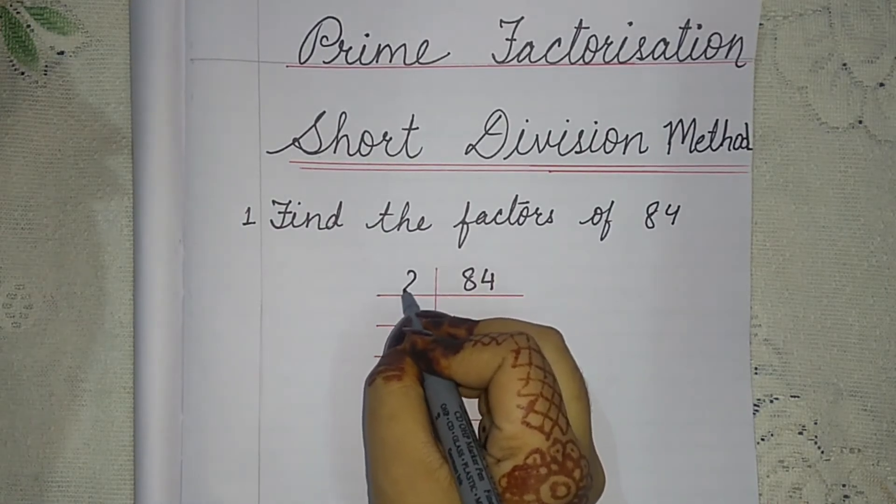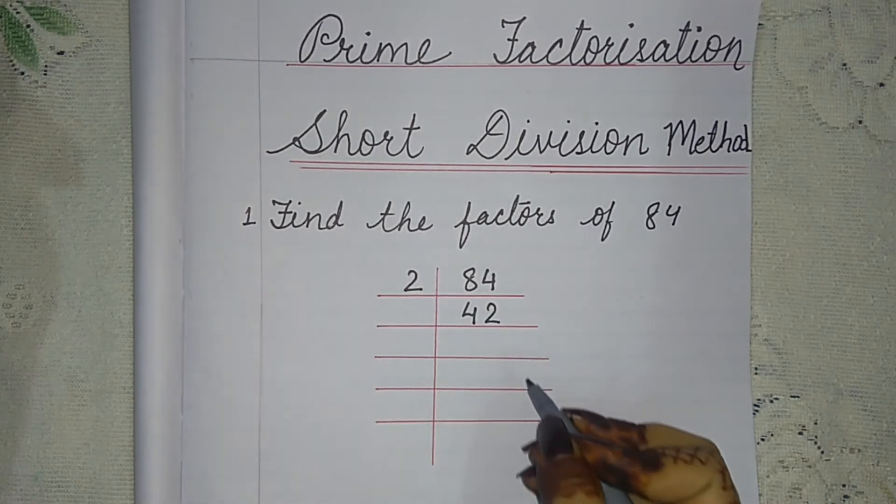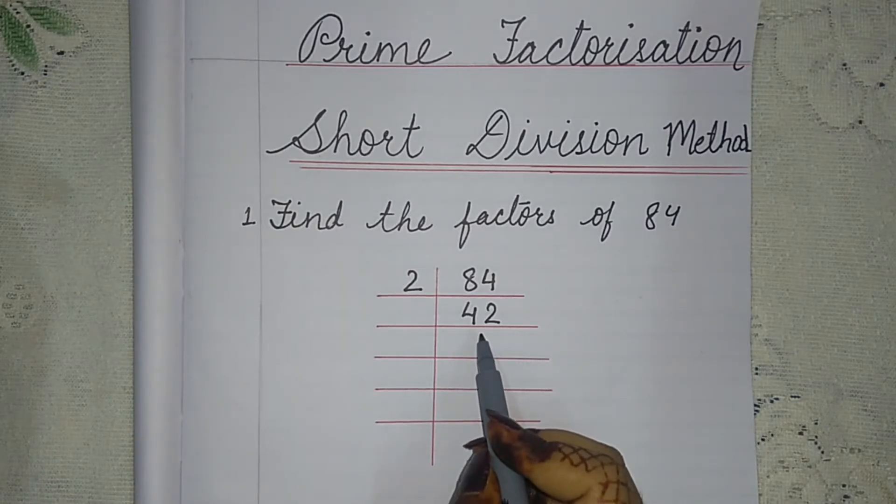So we will divide it by 2. Two fours are eight and two twos are four. Now our answer is 42.